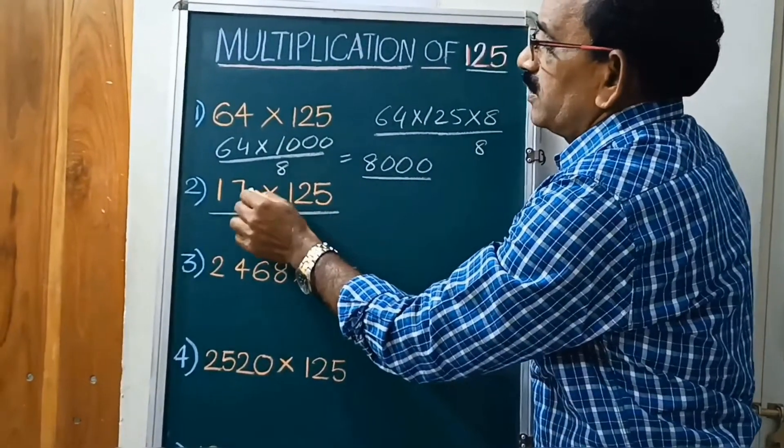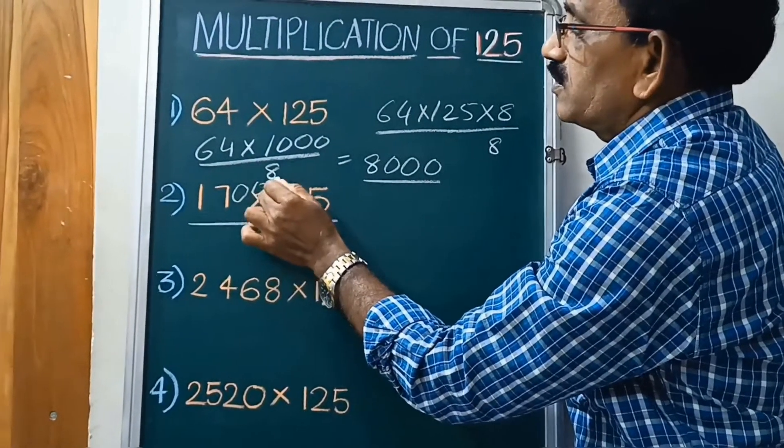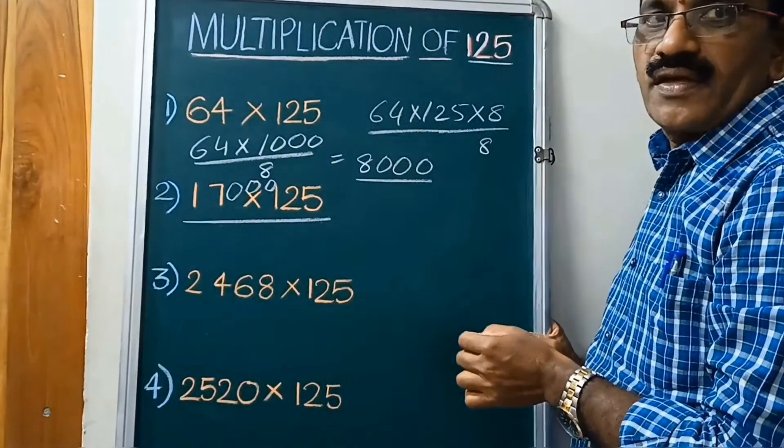Before 42, 3 zeros. 17 after 3 zeros. Divided by 8.